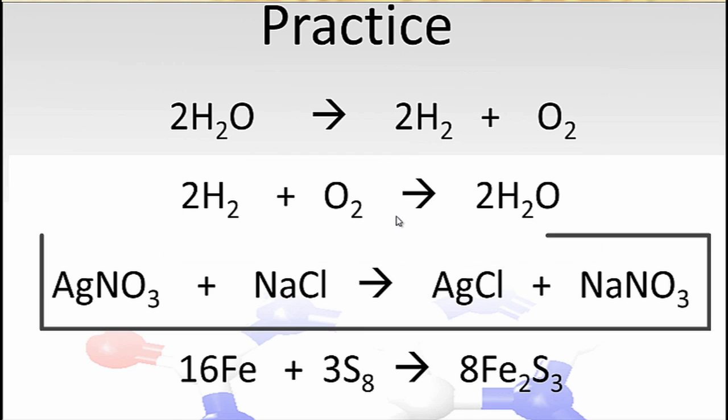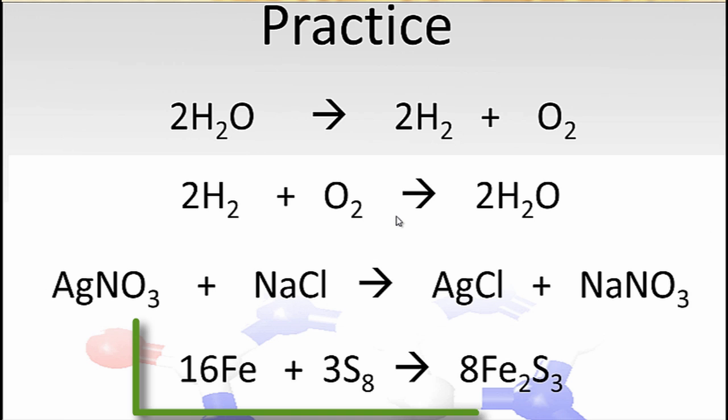In the third one, the Ag and the NaCl just switch places. That's called a double replacement or a double displacement reaction. And finally, in the last one, we have some really big coefficients in front, but we have Fe and S8 coming together to form Fe2S3. That is a combination or synthesis reaction.